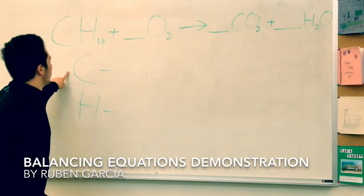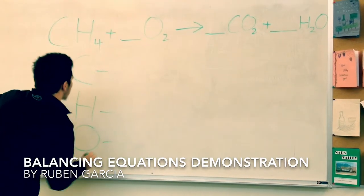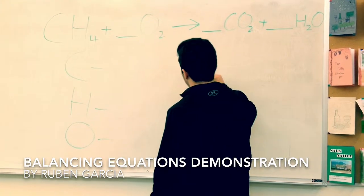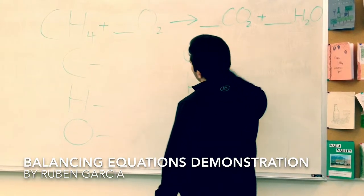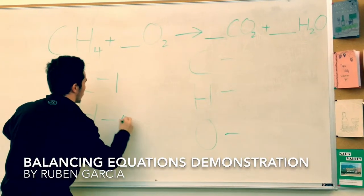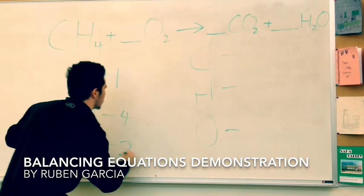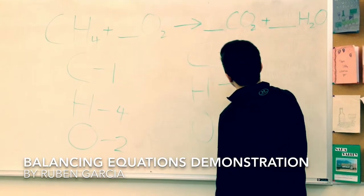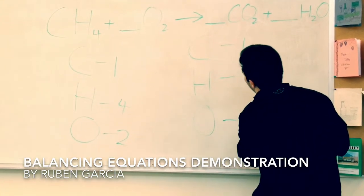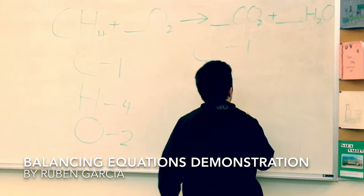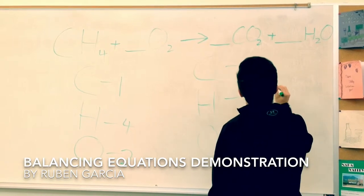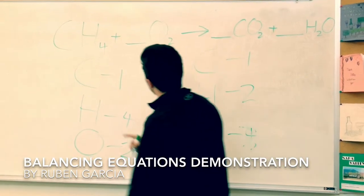First, you write all of the different elements that are on each side. So there's a carbon, a hydrogen, and an oxygen on both sides. And you count how many it is on each one. So in the reactant there's one carbon, four hydrogens and two oxygens. And on this side there's one carbon, two hydrogens, and four oxygens. And then two hydrogens.